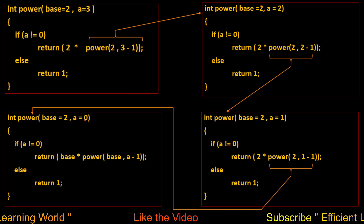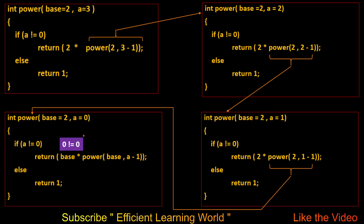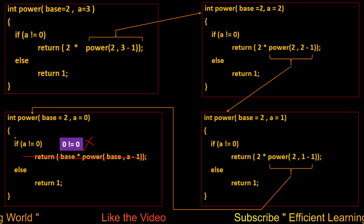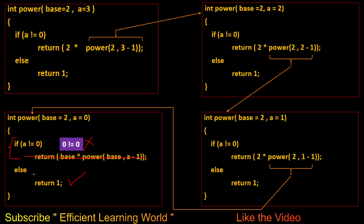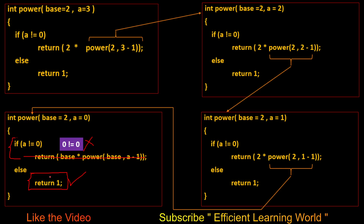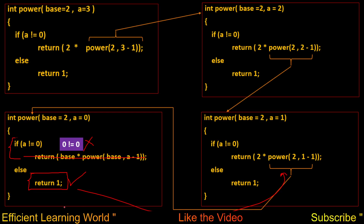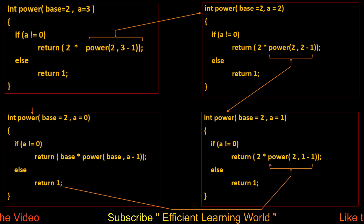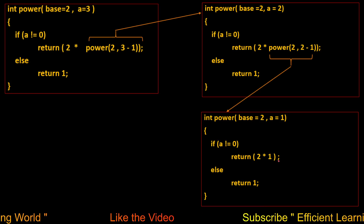Since the condition is false, the else part executes. The instruction 'return 1' runs, returning the value 1. This 1 is returned to the point where power(2,0) was called. The calling function now computes 2×1=2, so 2 is returned up the call stack. Then 2×2=4 is returned, and finally 4×2=8.